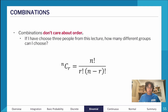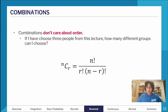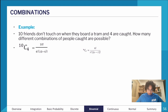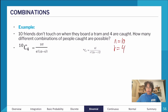Combinations don't care about order and are written as nCr — the number of people to choose from possible groups. For example: 10 people touch on when they board a tram and 4 are caught. How many different combinations of people are possible? We say the total number of people is 10 and we're choosing groups of 4, so we calculate 10 choose 4.